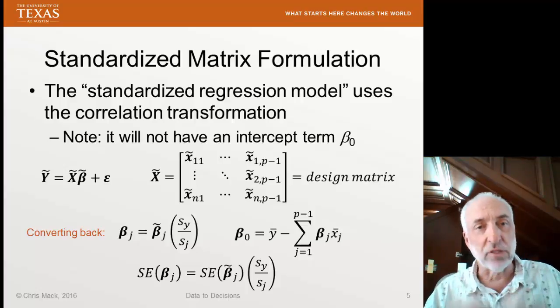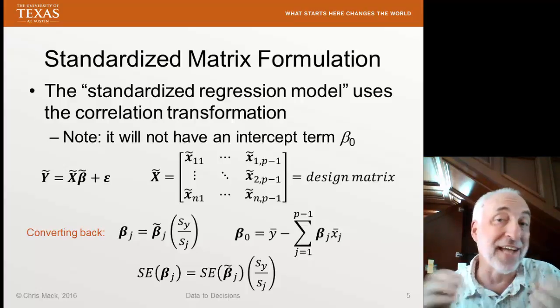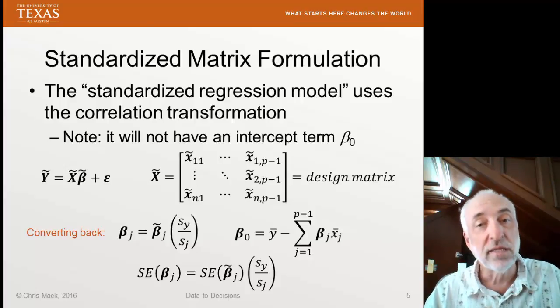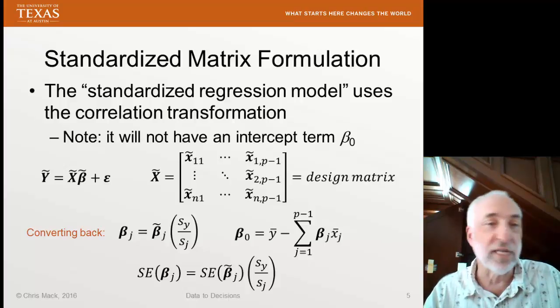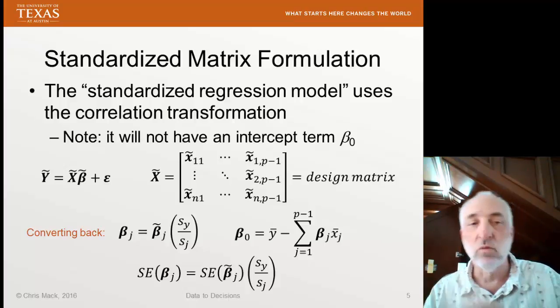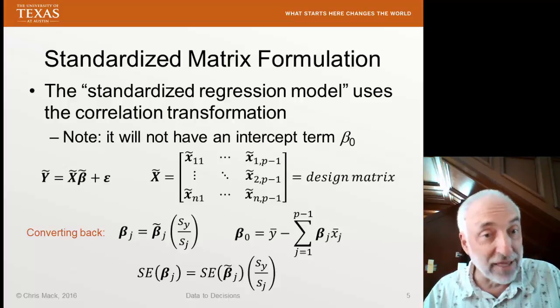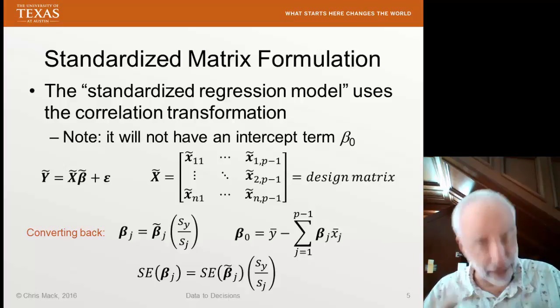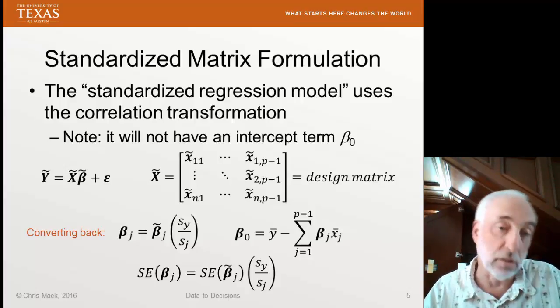The first thing that happens when we do what we call standardized regression modeling is that the intercept term goes away. There will be no intercept term in the model. It's simply because we've subtracted out the means of everything. When we do that, the intercept term, which includes all those means, will disappear.